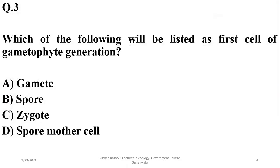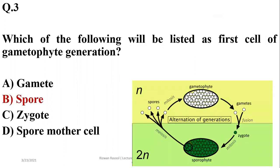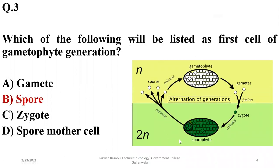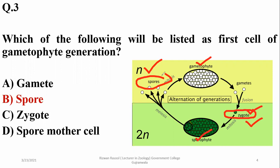Question: which of the following will be listed as the first cell of the gametophyte generation in alternation of generations in plants? It will be a spore. All haploid cells are cells of the gametophyte generation, and all diploid cells are cells of the sporophyte generation. Zygote is considered the first cell of the sporophyte generation, while spore is considered the first cell of the gametophyte generation.